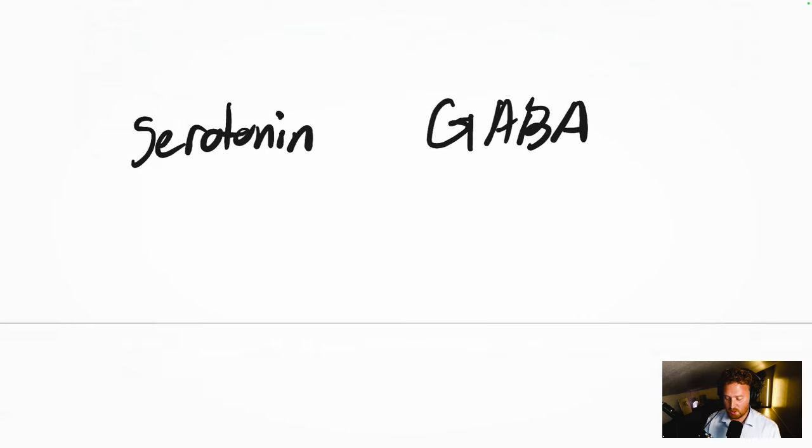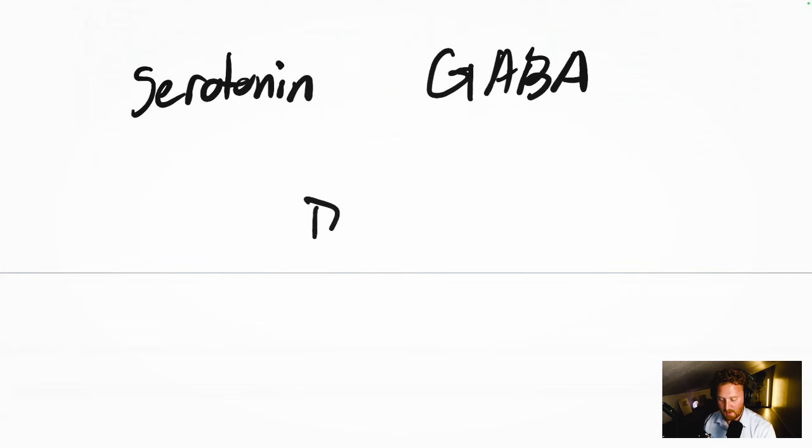First off, when it comes to depression, we're thinking about serotonin. When we're thinking about stress, we're thinking about the GABA pathway. And when it comes to motivation, focus, and drive, we're thinking about dopamine.